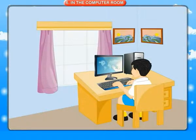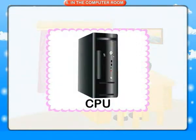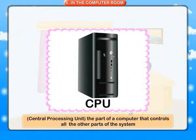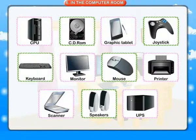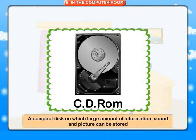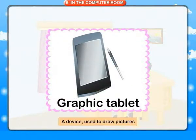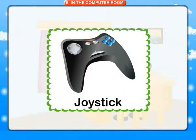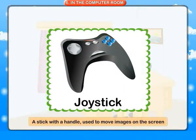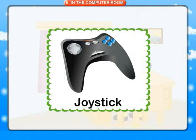In the computer room. CPU: central processing unit — the part of a computer that controls all the other parts of the system. CD-ROM: a compact disc on which large amounts of information, sound and pictures can be stored. Graphic tablet: a device used to draw pictures. Joystick: a stick with a handle used to move images on the screen.